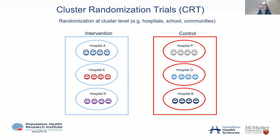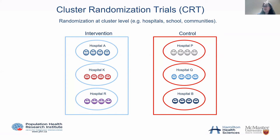A cluster randomized trial is different from a traditional individual randomized trial in that they randomize clusters instead of individuals. The unit of randomization will be hospitals, schools, communities, or medical clinics. On the right-hand side, for the intervention arm, you randomize the hospital so that all patients within that hospital receive the intervention, and the hospital randomized to control means all patients in that hospital receive control.